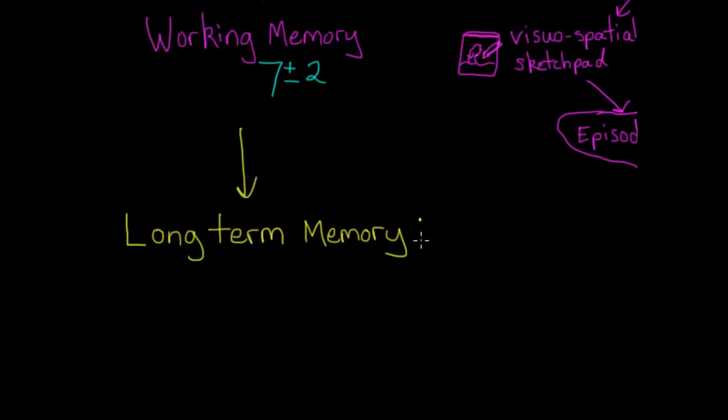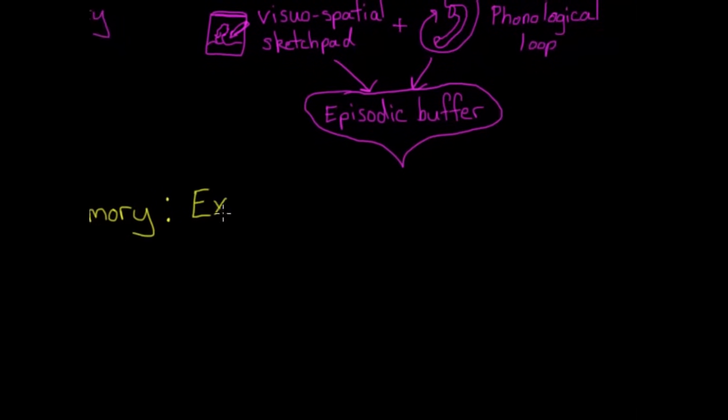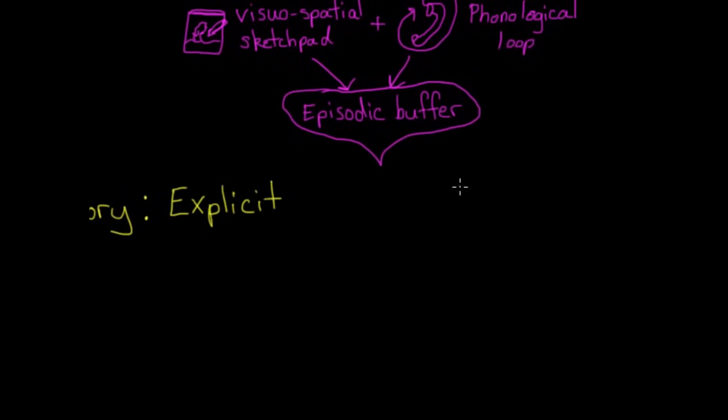We have two main categories: explicit, also called declarative, and implicit, also called non-declarative. As you can see, psychologists like to give these things multiple names, but fortunately they can generally be broken down into something that makes sense, so don't get intimidated.